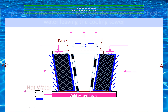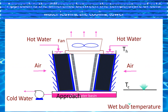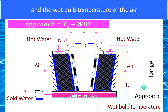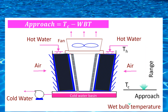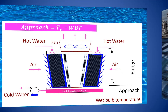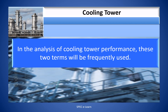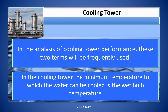Approach is the difference between the temperature of cold water leaving the cooling tower and the wet bulb temperature of the air: Approach = TC − WBT. In the analysis of cooling tower performance, these two terms will be frequently used. The minimum temperature to which water can be cooled in a cooling tower is the wet bulb temperature.